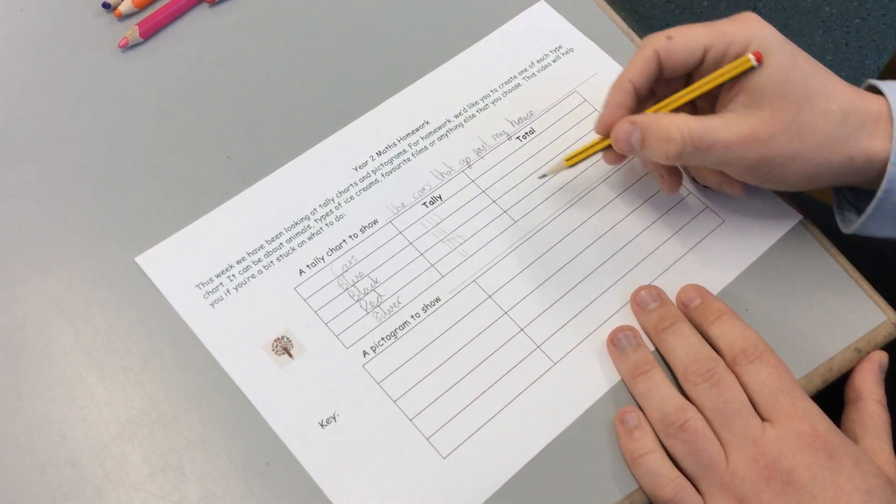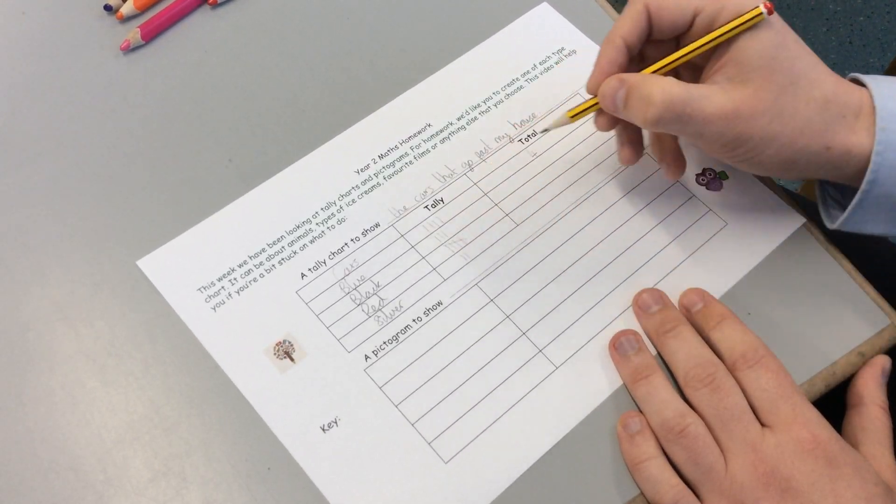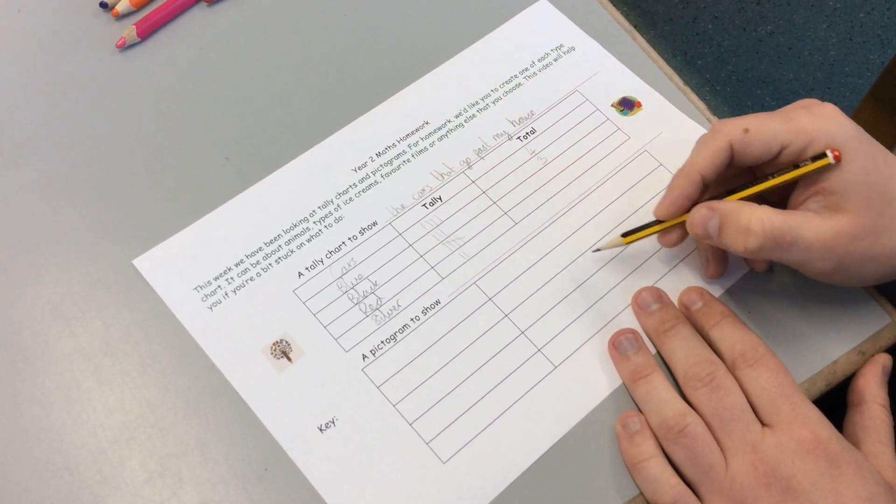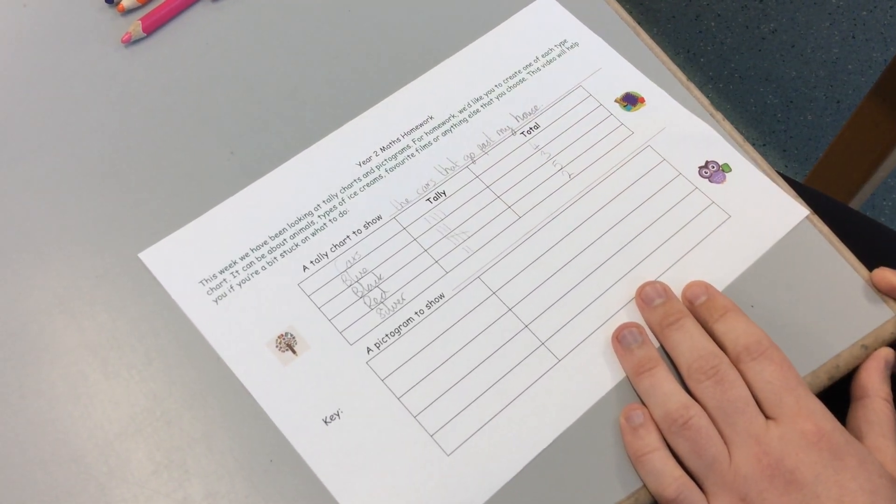And then all I do is I put in my tally. So one, two, three, four for the blues. Three black cars went past. Five red ones. And two silvers. And that's my tally chart.